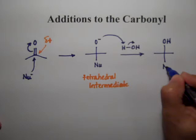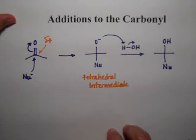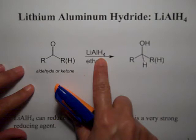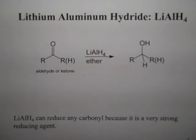That's what we're going to see in these reactions when we attack the carbonyl of ketones and aldehydes. The first reaction we're going to do is a reduction with lithium aluminum hydride. Lithium aluminum hydride has four hydrides and it's a very strong reducing agent.